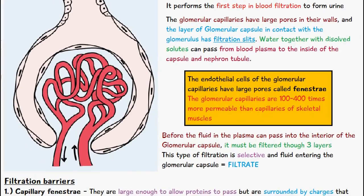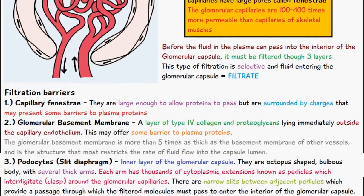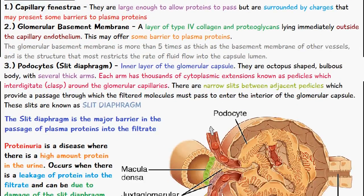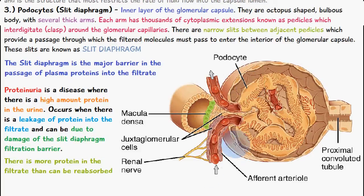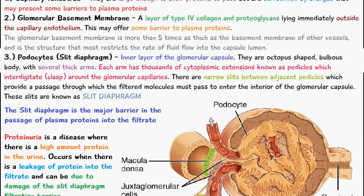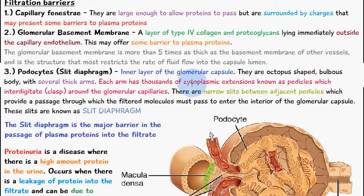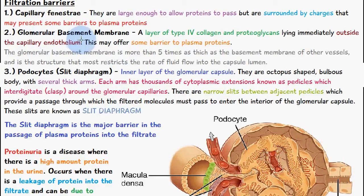Now let's talk about the three filtration barriers. There is a diagram included here which shows the glomerular capsule in much more detail, including the three filtration barriers. The first filtration barrier is the capillary fenestria. They are large enough to allow proteins to pass, but they are surrounded by charges that may present some barrier to plasma proteins. The fenestria or slits in the capillary wall provide the first layer of filtration.